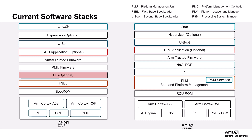In Versal devices, the RCU, after all mandatory security checks, loads the PLM, which takes control of the boot process. The PLM then reads the PDI from the boot source and configures the components of the system, including the NOC initialization, DDR memory initialization, programmable logic, and processing system, and then completes the device boot. In this flow, the NOC, DDR, and PL configurations are closely interconnected.